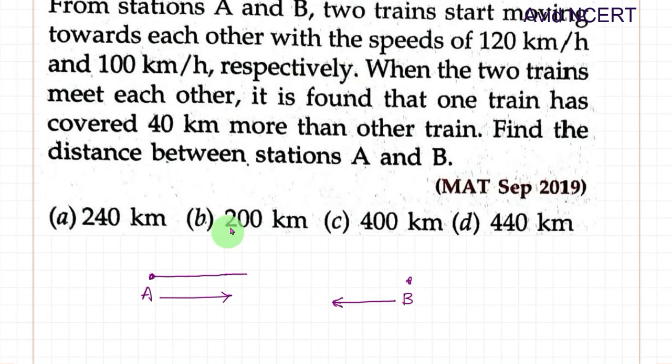The speed is 120 km per hour. So train A, speed of train A equals 120 km per hour and speed of train B is 100 km per hour. Speed B equals 100 km per hour.